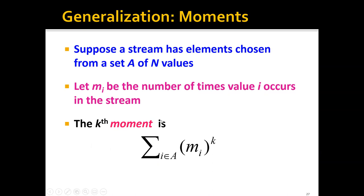Then the k-th moment would be defined as the sum of m_i to the power of k, where i indexes the distinct values in the set.